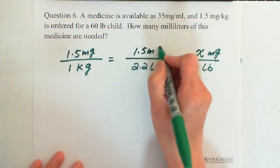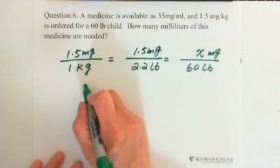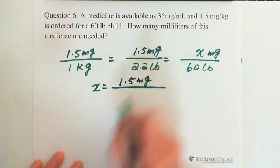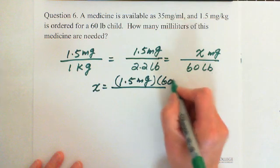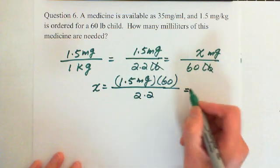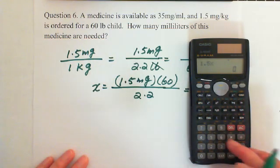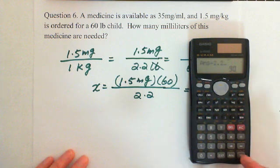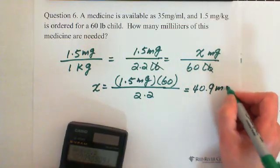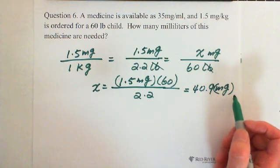So x equals 1.5 milligrams multiplied by 60, with pounds canceling out, divided by 2.2. Calculating: 1.5 times 60 equals 90, divided by 2.2 gives 40.9. So the child needs 40.9 milligrams of medicine. For this 60-pound child, 40.9 milligrams of medicine are needed.